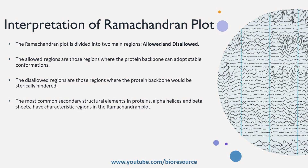For example, typical alpha helices and beta sheets fall within these allowed regions. In contrast, regions with little or no data points on the Ramachandran plot represent disallowed conformations. These areas are characterized by steric clashes, meaning backbone atoms are too close to each other, creating unfavorable and high-energy conformations. Proteins are generally not found in these regions because they represent strained or impossible backbone conformations.